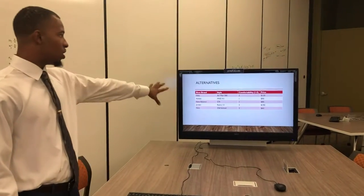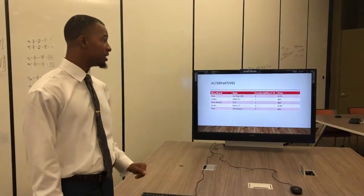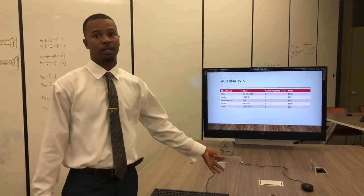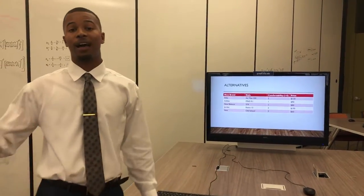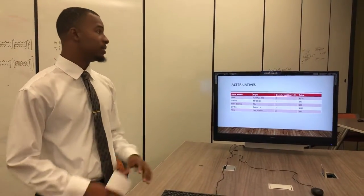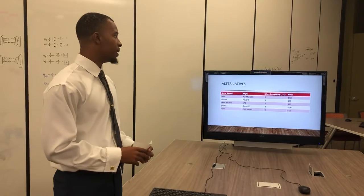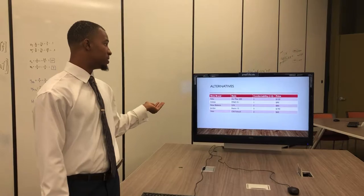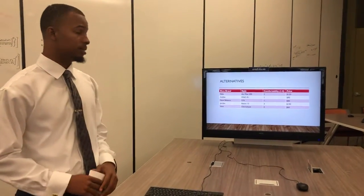Comfortability, these are our rankings from one to five, with one being the most comfortable and five being the least comfortable, and then we also have our prices. And so as we can see right now, our cheapest shoe are the Vans, and our most expensive shoe are the Jordan Retro 13s.